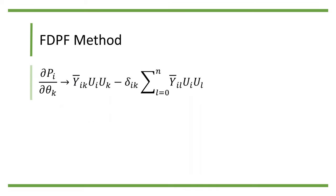In the meantime, partial Pi over partial theta k approaches y bar ik ui uk minus delta ik convention l from 0 to n y bar il ui ul, while partial Q over partial uk approaches y bar ik ui plus delta ik convention l from 0 to n y bar ik ui.